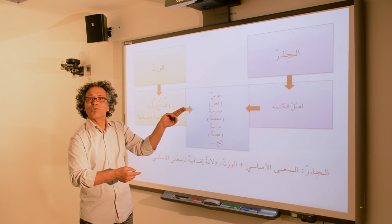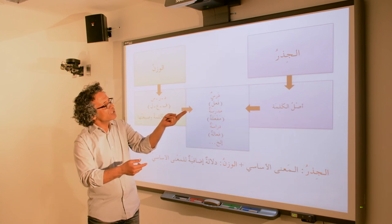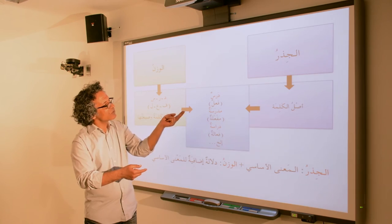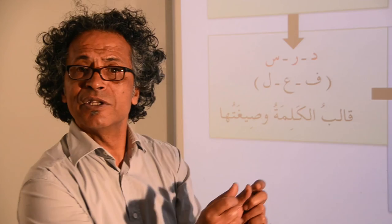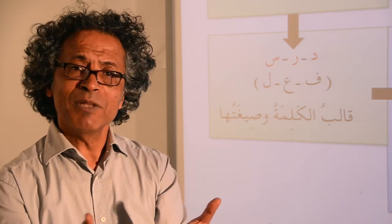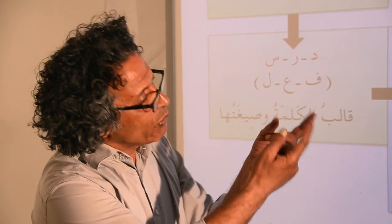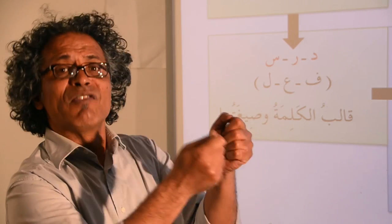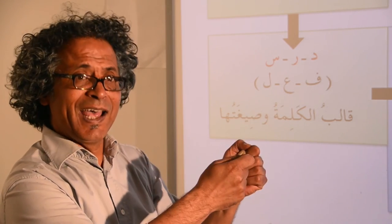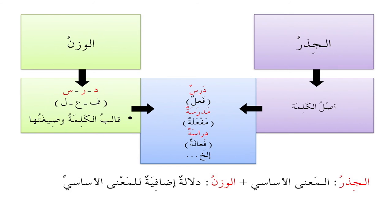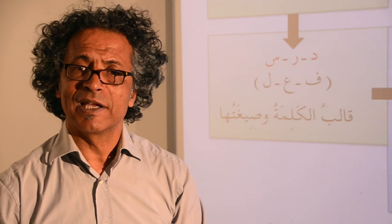So in درسَ, what we have is the voweling, so we have فَعَلَ. But in مدرسة, we have two additional parts: the ميم in the beginning and also the تاء at the end. We replaced دارسة with فِعالة — we added the ميم، التاء المربوطة، and then put the voweling of the word.